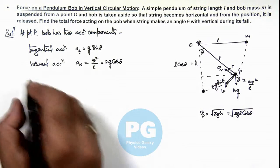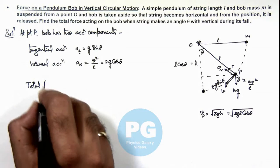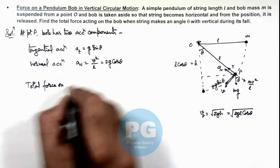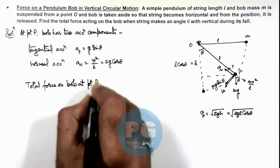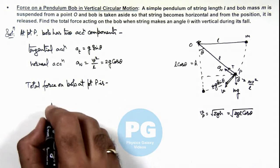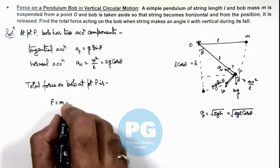And now we can directly write the total force on the bob at point P. The force can be written as m × a_total, which is written as root of a_tangential² plus a_normal².